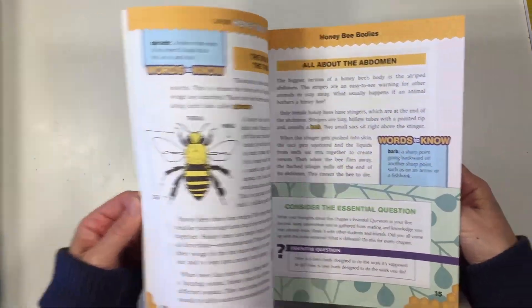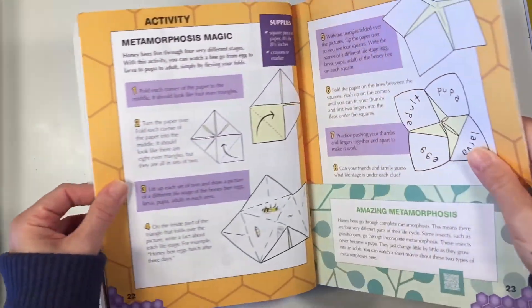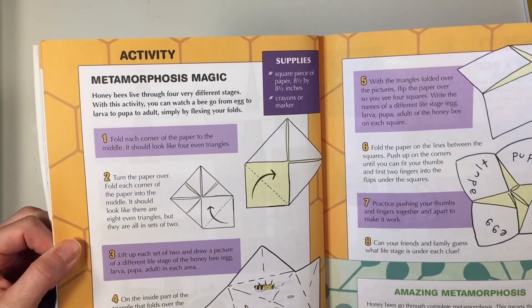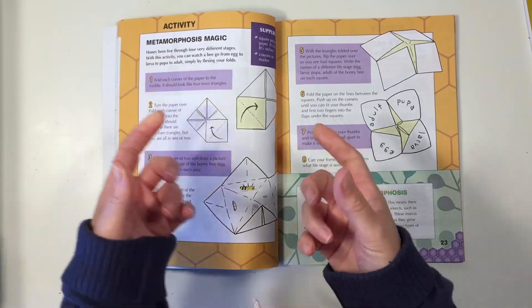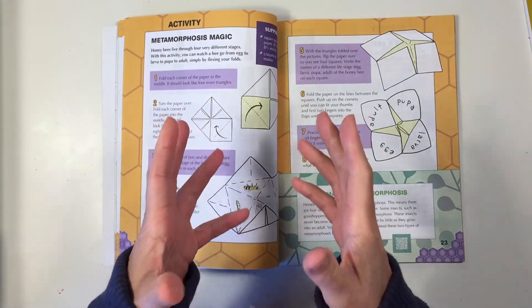Today we're going to be doing this project here called Metamorphosis Magic. It's with the little paper squares that you fold and unfold. It's a little game.